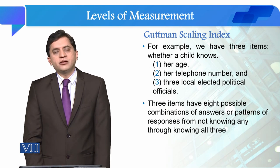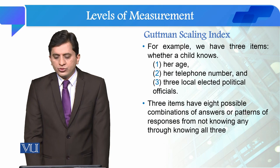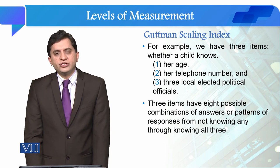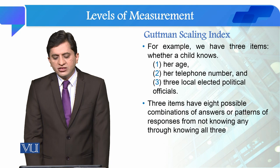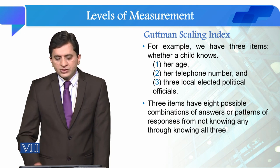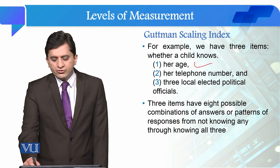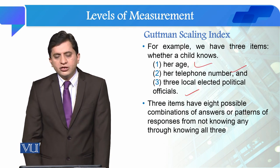For example, if we look at Goodman Scaling Index, we are interested to know the knowledge of a child about three things: their age, their telephone number, and three local elected political officials. All these three items — age, telephone number, and elected political officials — are understood to be in the shape of a hierarchy.